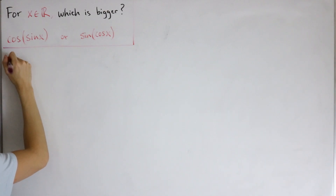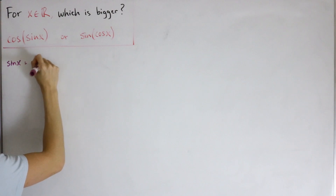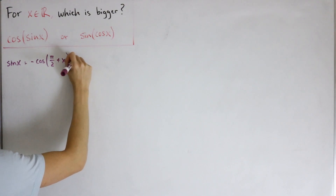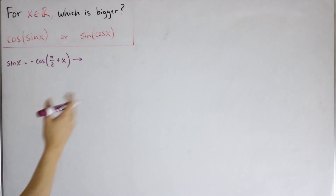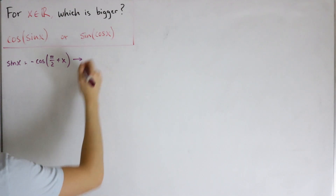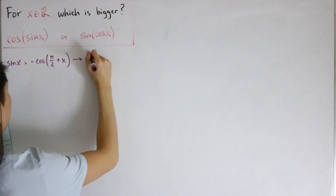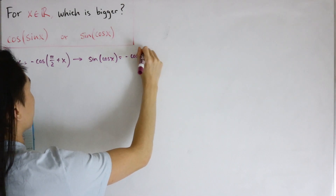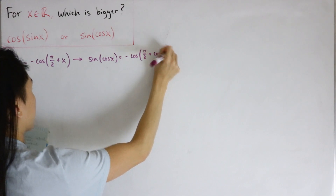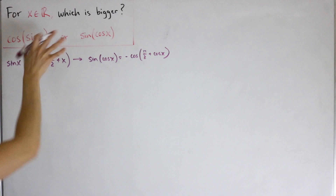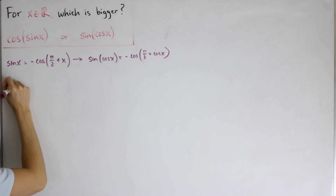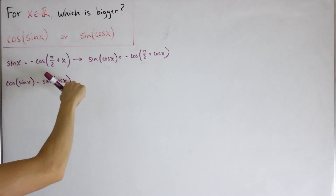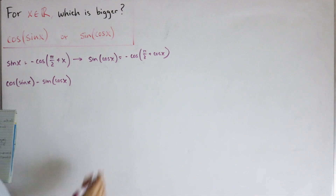First, we know that for the phase shift, sine of x can be written as negative cosine of (π/2 + x). Since cosine and sine are continuous everywhere in the reals, we can now plug in cosine of x as the input for x. So now sine of cosine of x equals negative cosine of (π/2 + cosine of x). With this, we're going to take the difference of the two functions: cosine of sine of x minus sine of cosine of x.